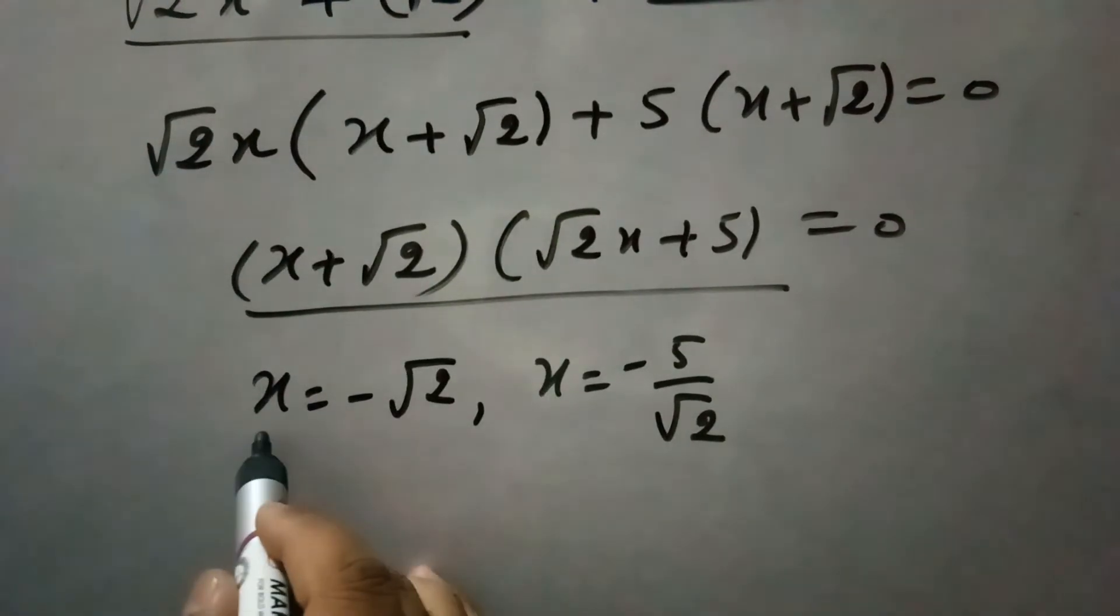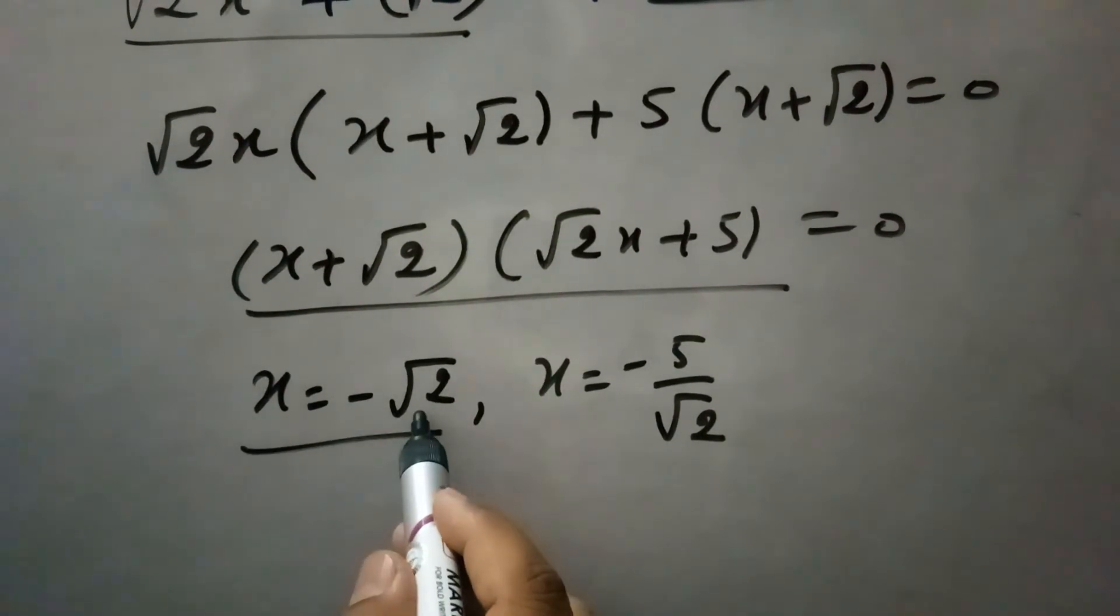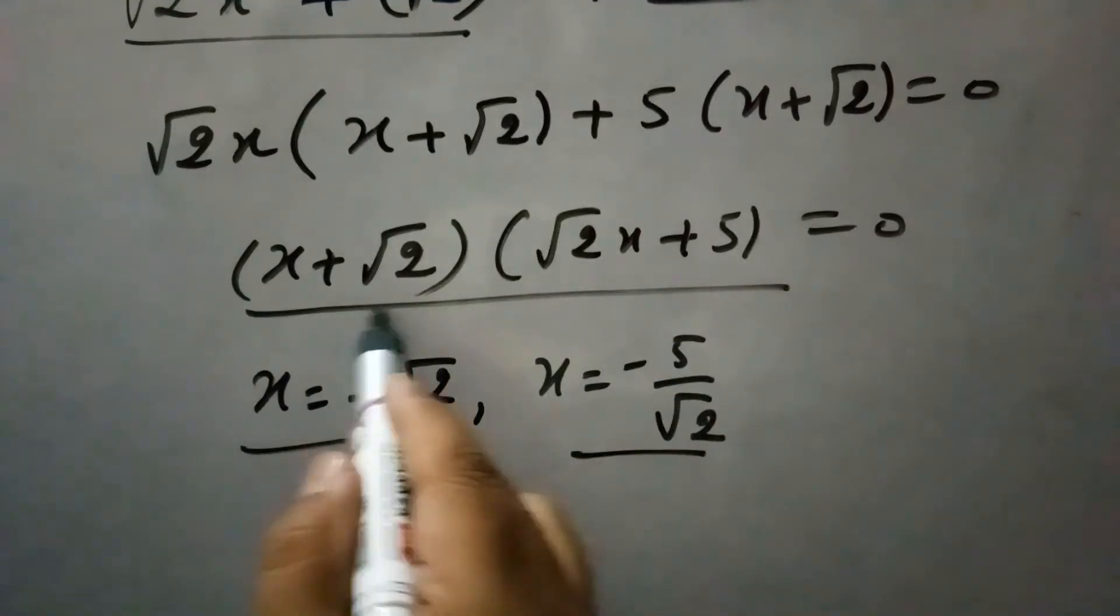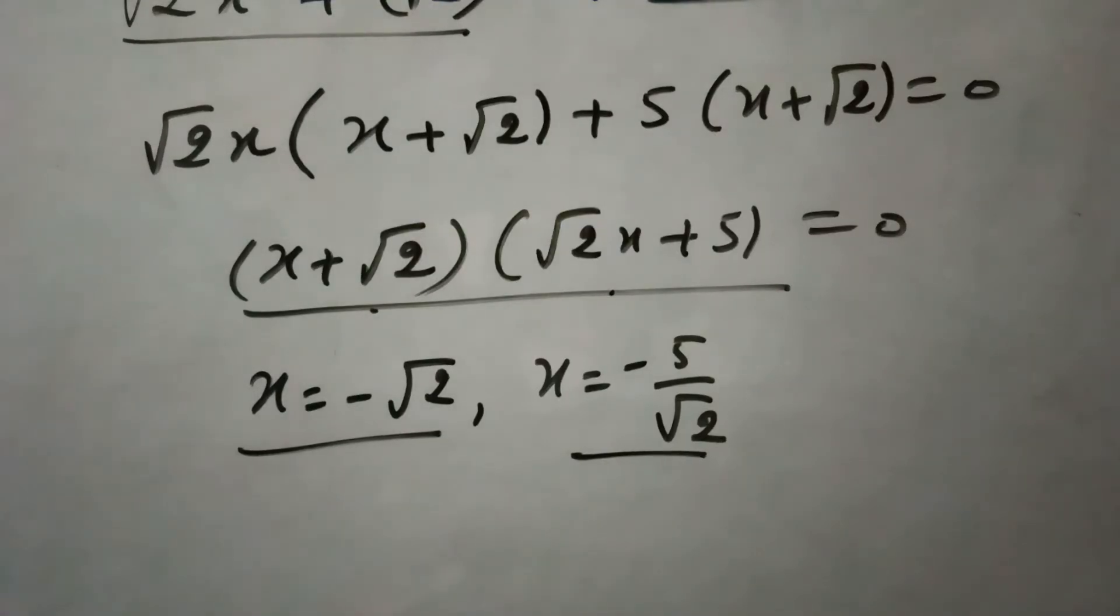And the roots are x equals to minus root 2 and x equals to minus 5 by root 2. So these are the factors and these are the roots or zeros for this polynomial quadratic equation.